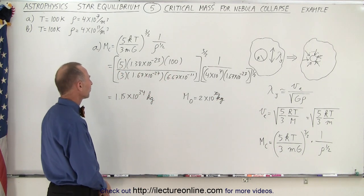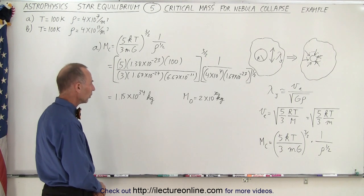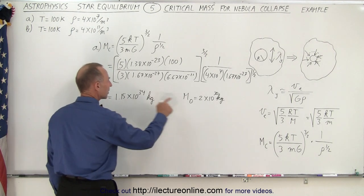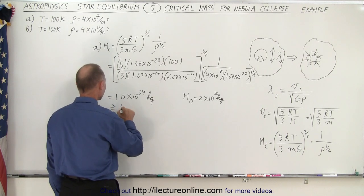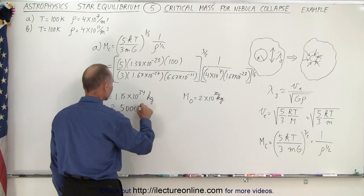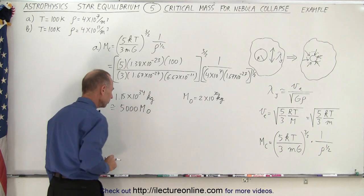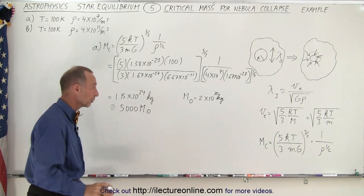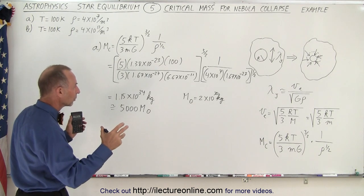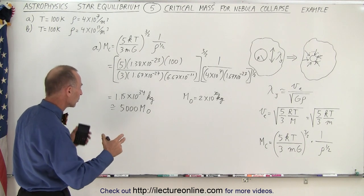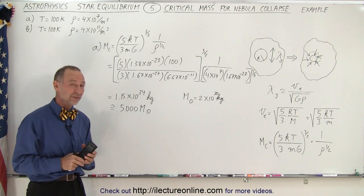And this is 1.15 times 10 to the 34. So 34, that would be 10,000 times. That would be approximately 5,000 times the mass of the sun. All right. Again, we're working approximately because these are not exact things.